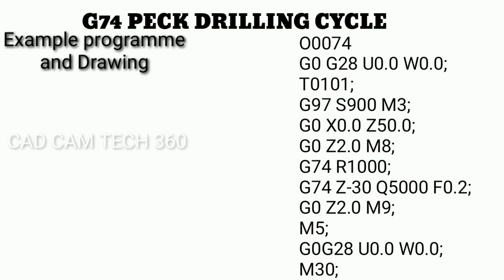After completing the G74 cycle, G0 Z2.0 M9 returns the tool to the clearance position and turns the coolant off. M5 stops the spindle. Then G0 G28 U0.0 W0.0 sends the machine back to the home position, and M30 ends the program.